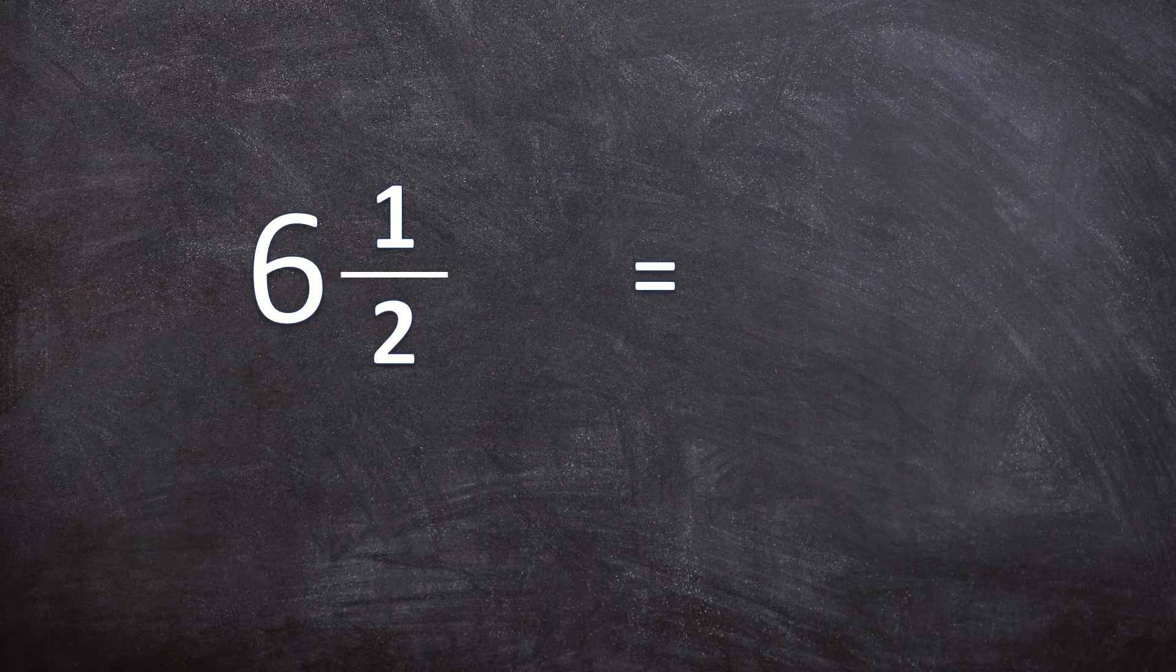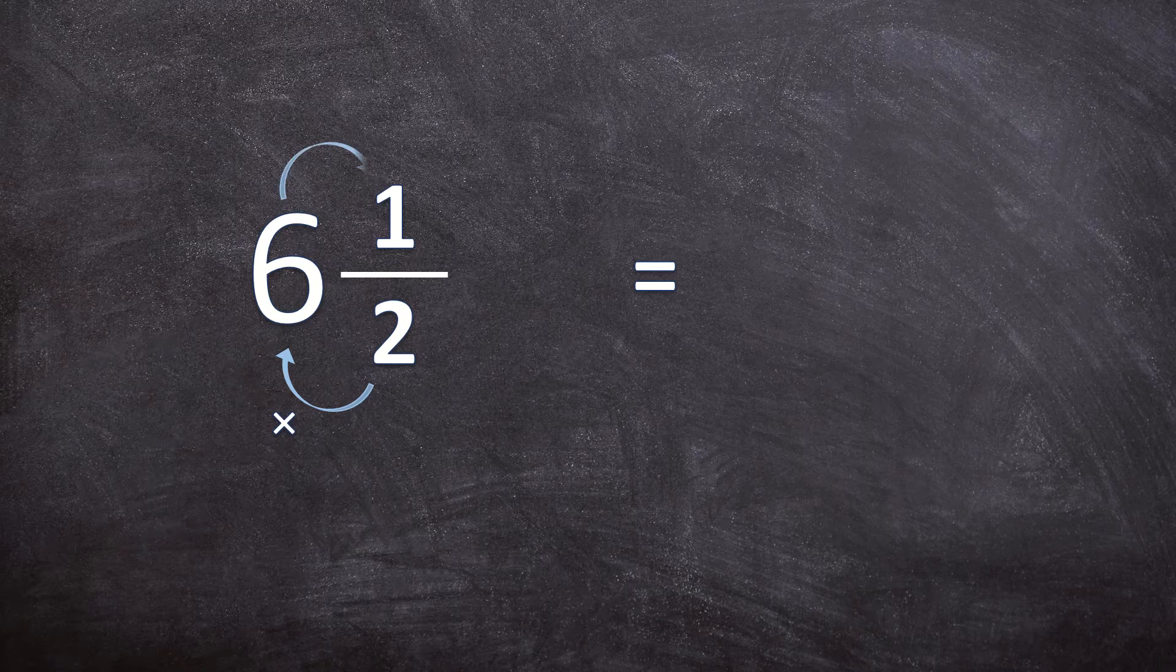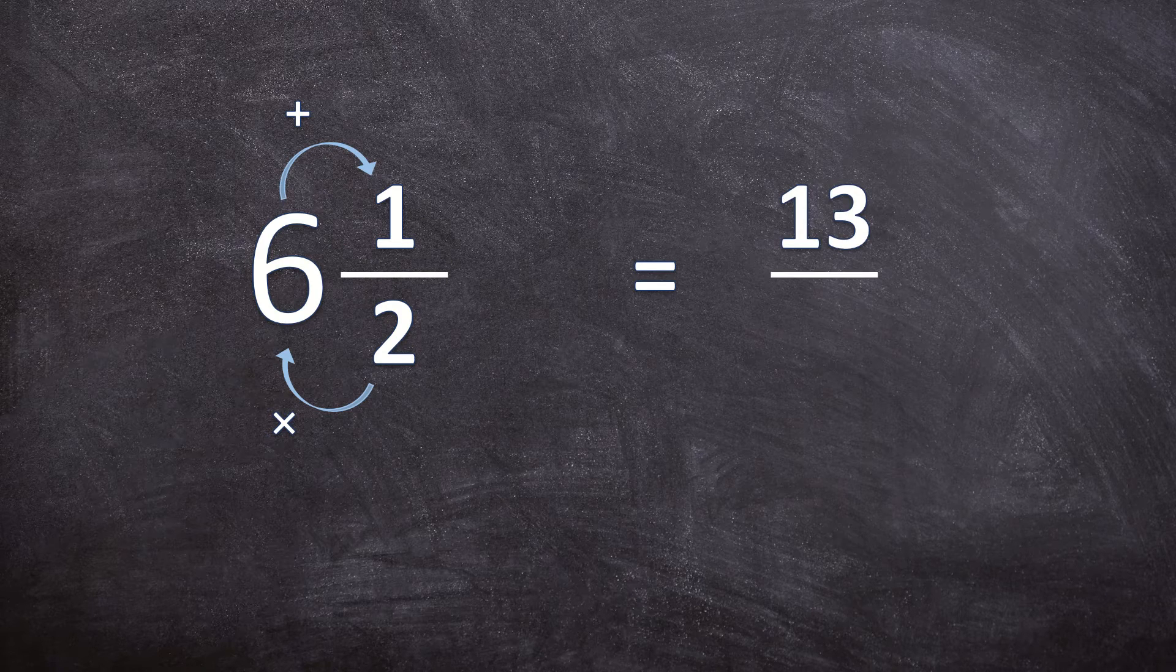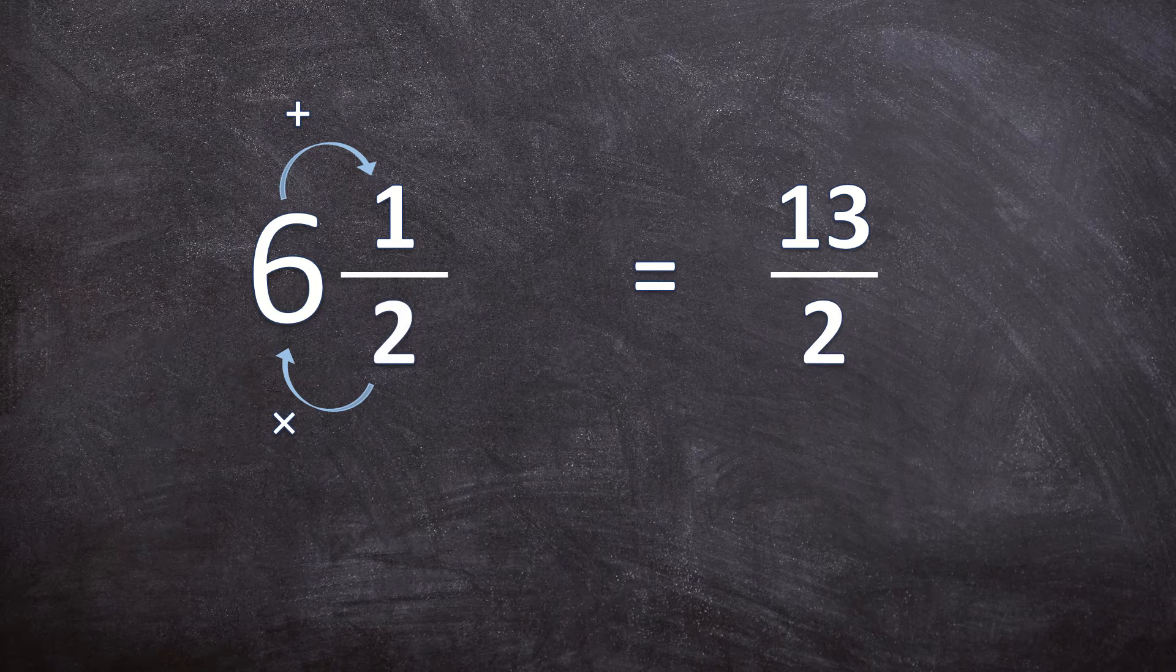Remember the first thing you do is you multiply the denominator with the whole number. Two times six is 12. Now you add the numerator. 12 plus one is 13 over, remember the denominator stays the same. So it stays two.